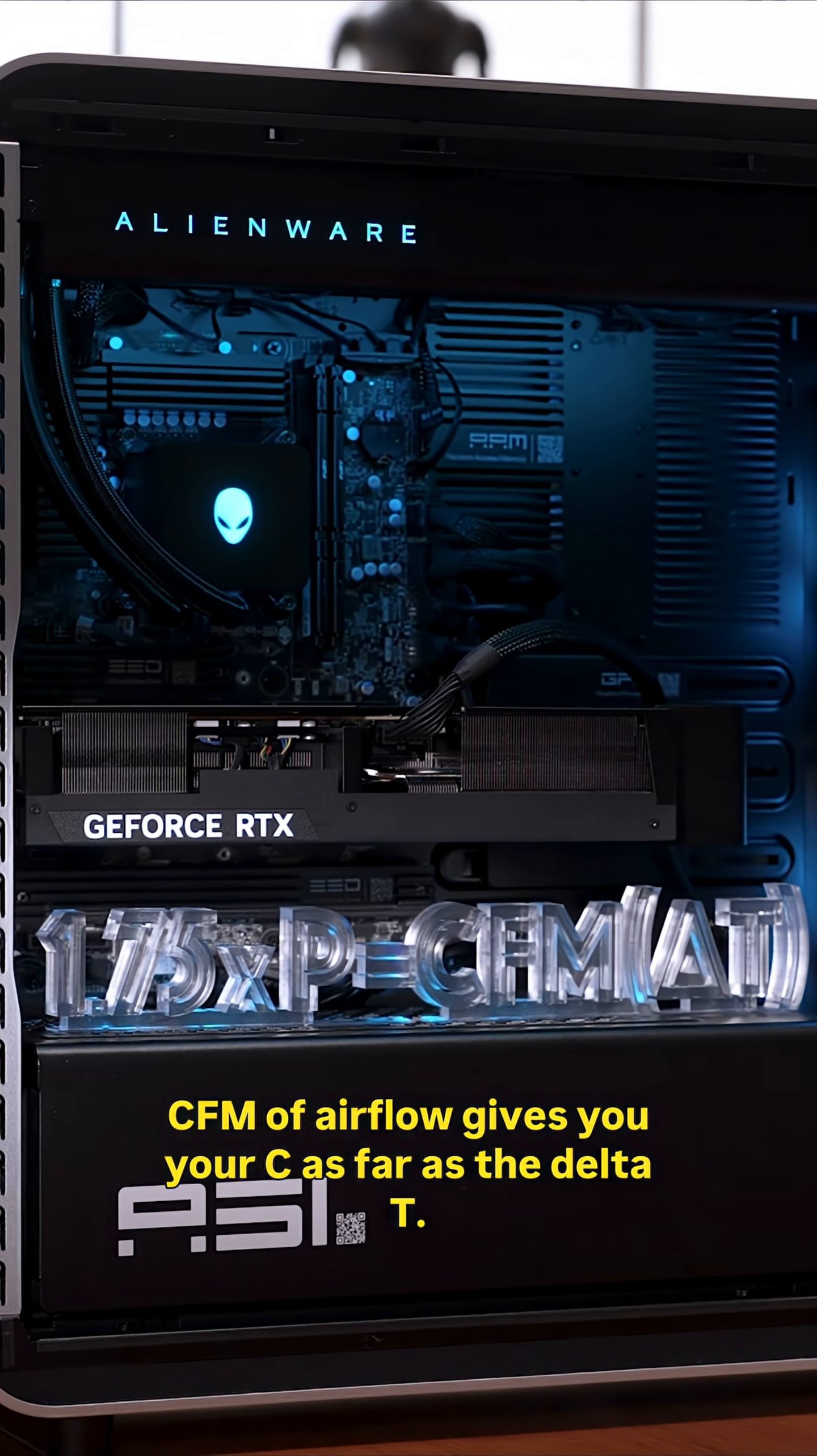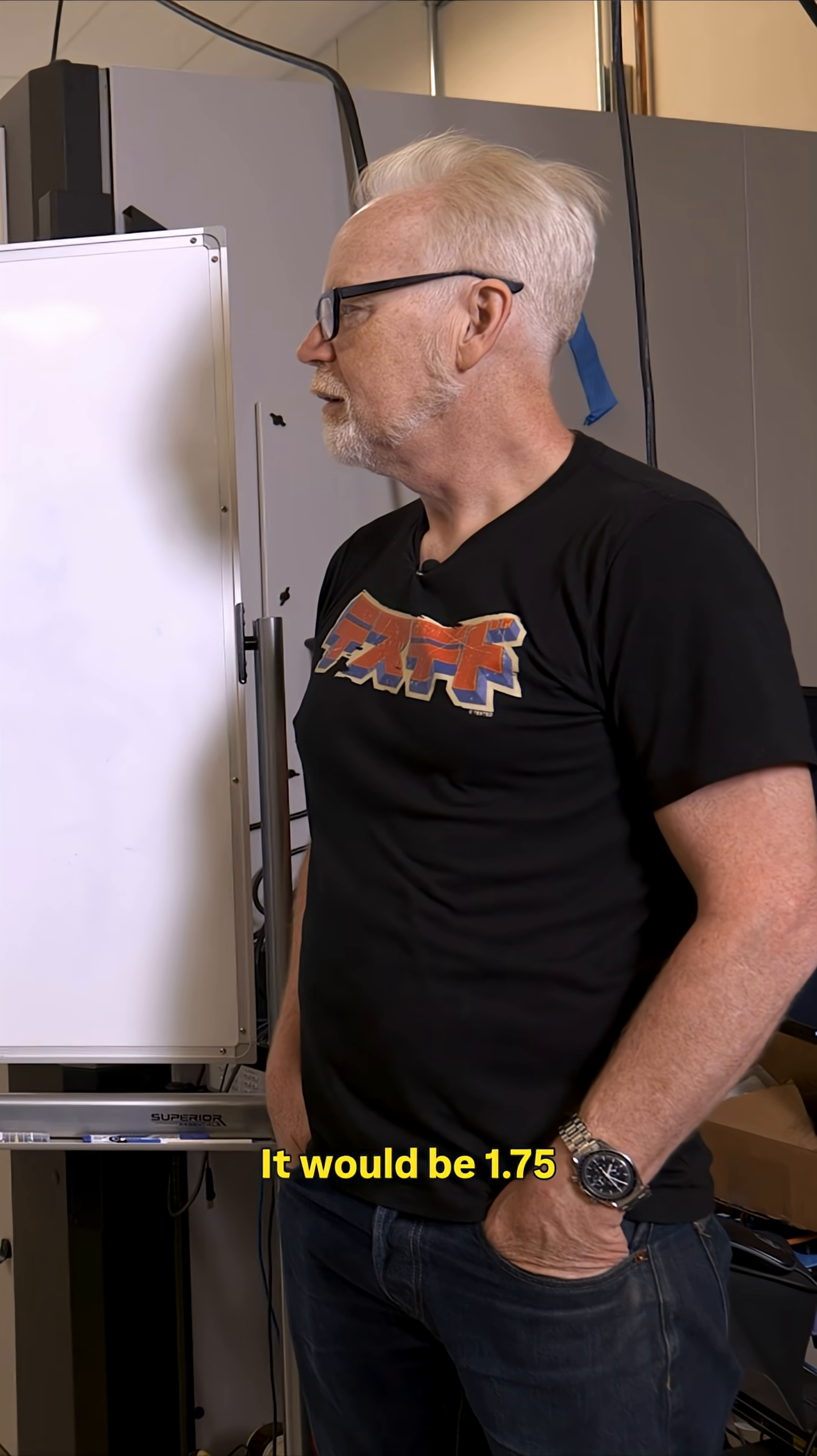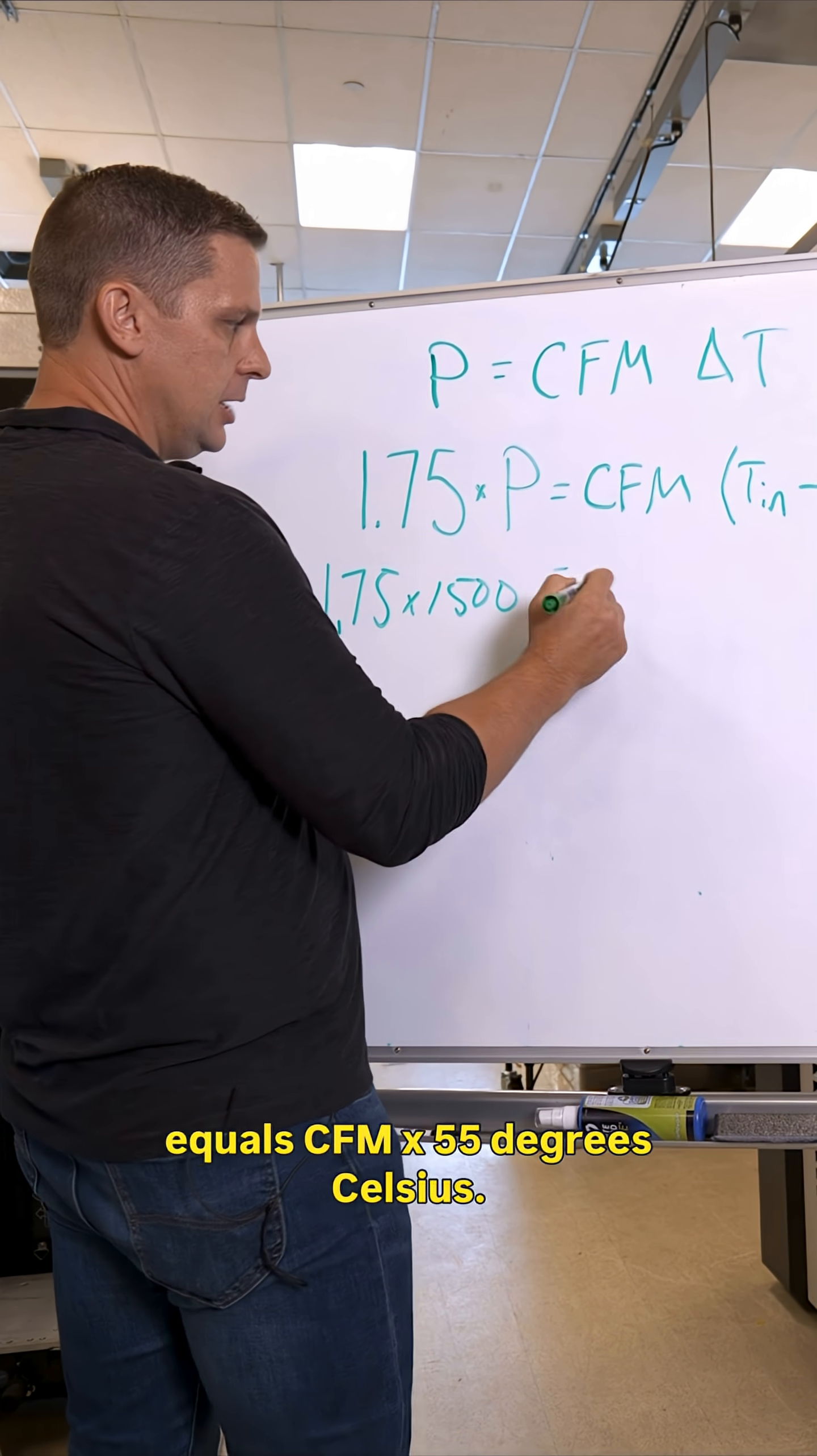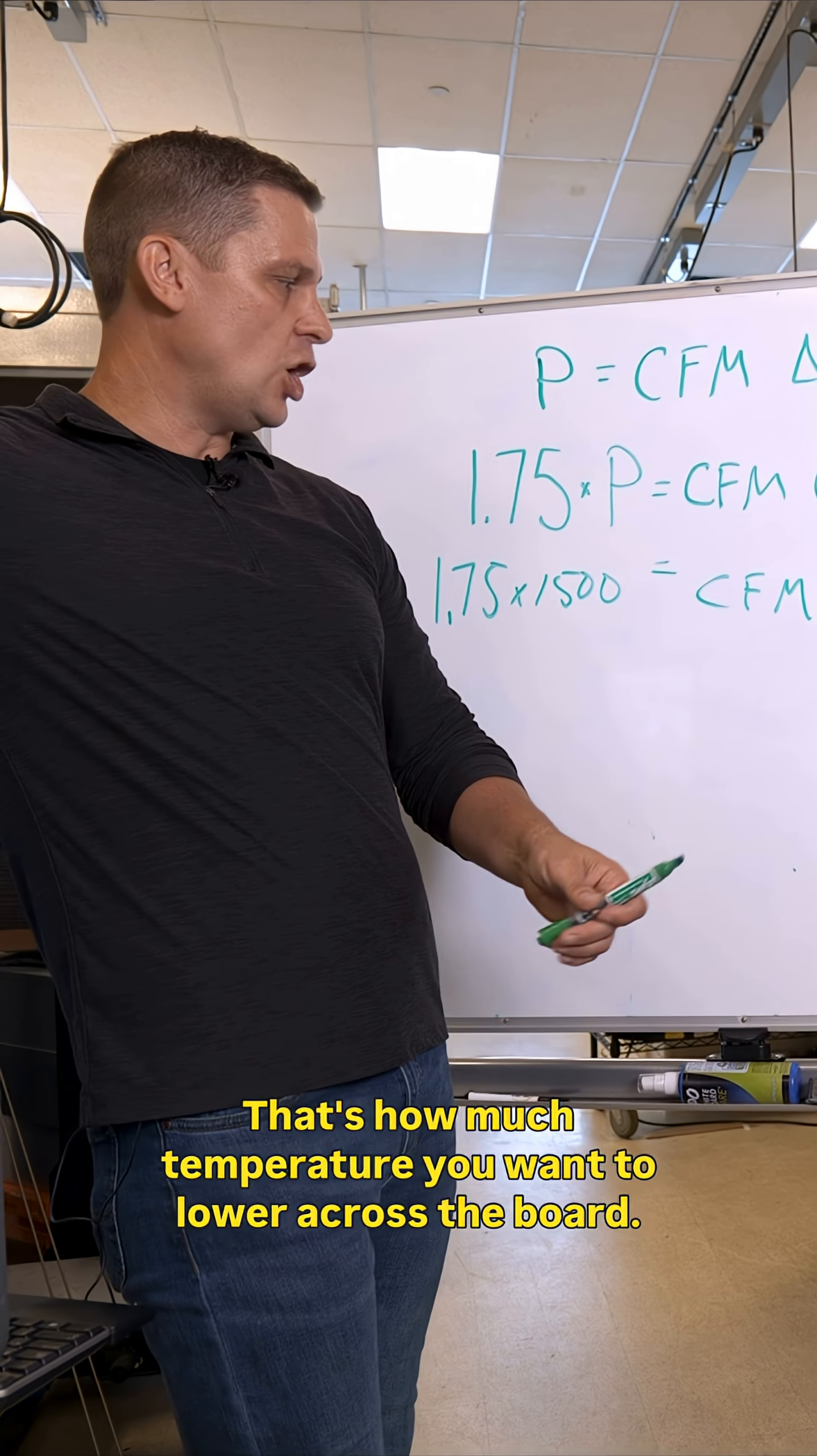Let's say I want a 55°C exhaust temp. In this particular case with 1500 watts, it would be 1.75 times 1500 equals CFM times 55 degrees Celsius. That's how much temperature you want to lower across the board—the exhaust temperature coming out of the unit minus the local ambient.